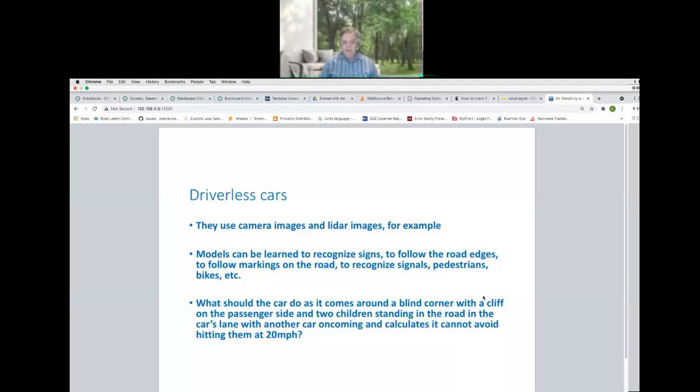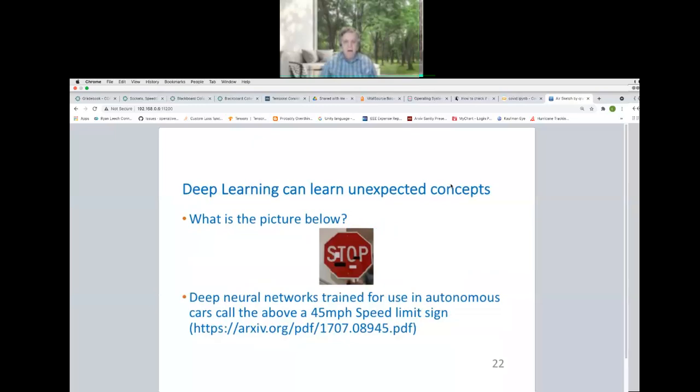So driverless car kinds of things. They use camera images, LiDAR images, for example, and the models can be learned to recognize signs, follow the road edges, follow the markings on the road, recognize signals, pedestrians, bicycles, all sorts of things. But there are interesting questions for an artificial intelligence system. What do you do? Do you come around a blind corner with a cliff from the passenger side and do children in the road, in the car's lane, another car oncoming, and you cannot avoid hitting at 20 miles an hour the people? Do you go off the cliff? Do you go head on into the other car and perhaps kill both you and the other person? Do you hit the people? What does the AI do? Do you have a dial in your car that says you want to be more altruistic and less altruistic? There are no good answers to that.